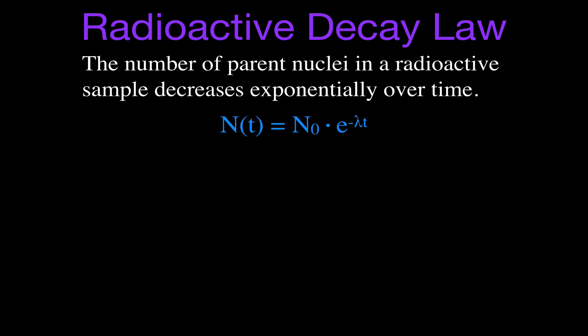This is radioactive decay law, and really in physics the laws are best explained by equations. What radioactive decay law says is that the number of parent nuclei in a radioactive sample decreases exponentially over time, and that's due to the half-life. If you have some amount of sample, after one half-life you'll have half the number of radioactive nuclei, then another half, so it goes: whole, half, quarter, eighth, sixteenth — that's exponential decay.